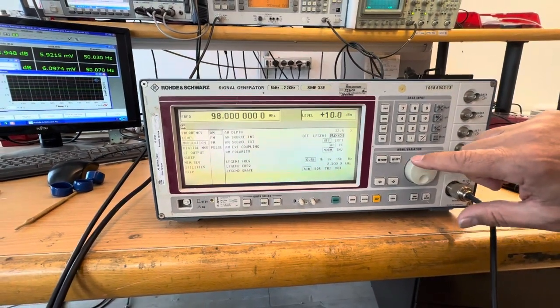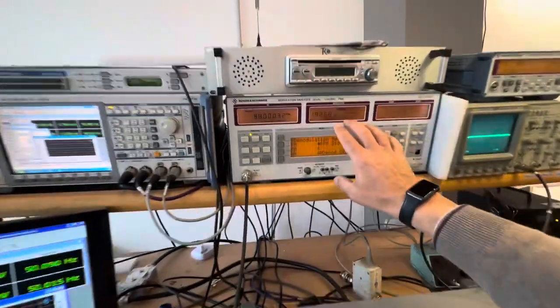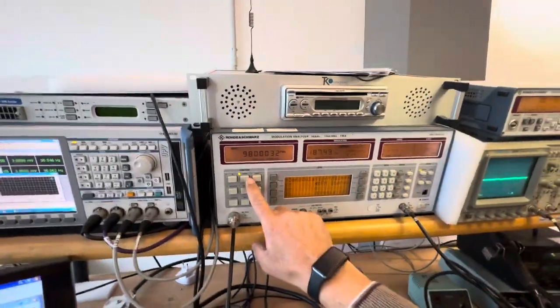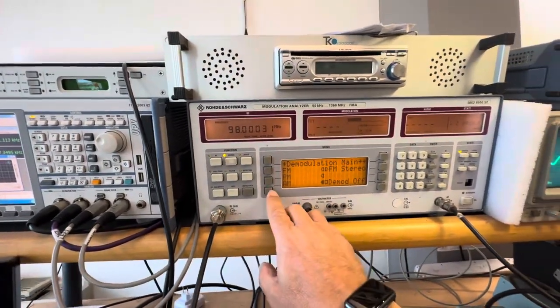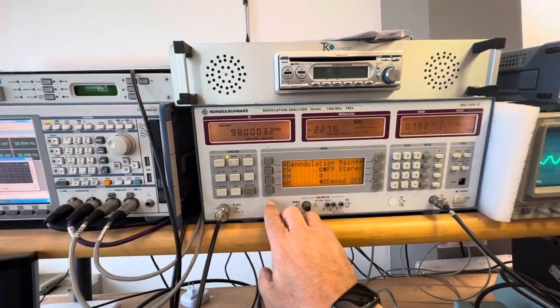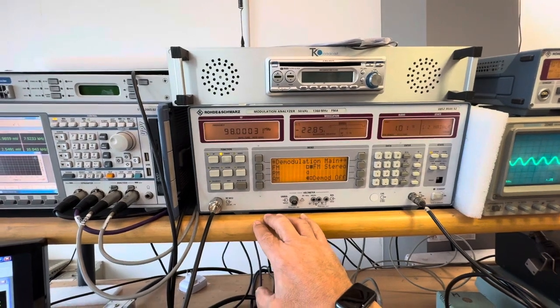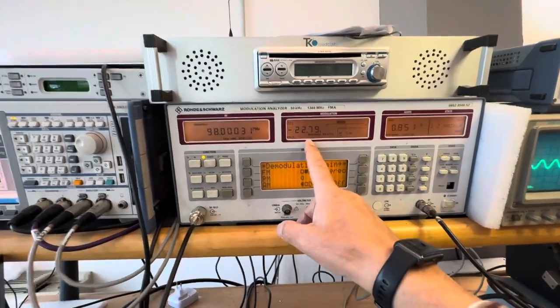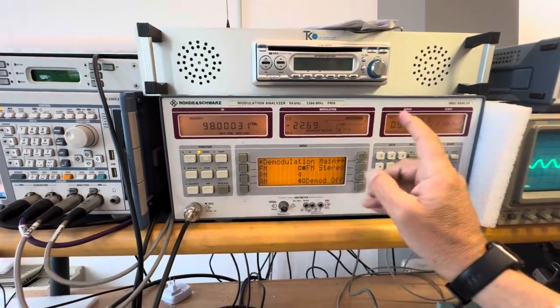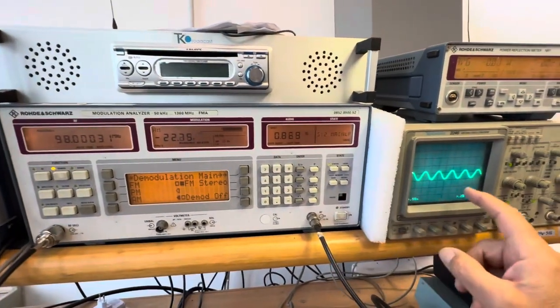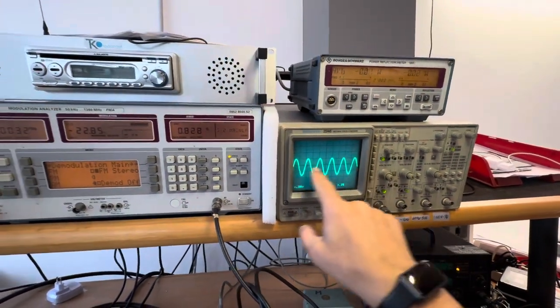Okay. Now I will go to my analyzer and change the demodulator from FM to AM. Okay. In this case, I can see here the level of modulation and the level of distortion and this sinus that we are producing in this case.